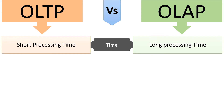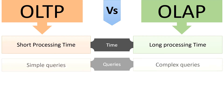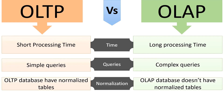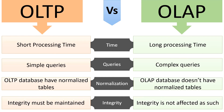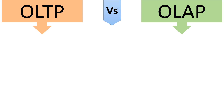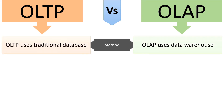OLTP transactions are short while OLAP transactions are long. OLTP requires less time to process data whereas OLAP requires more time. OLTP queries are short and simple, while OLAP queries are long and complex. OLTP databases have normalized tables whereas OLAP databases do not. In OLTP the integrity of the database must be maintained, whereas integrity is not affected in OLAP.